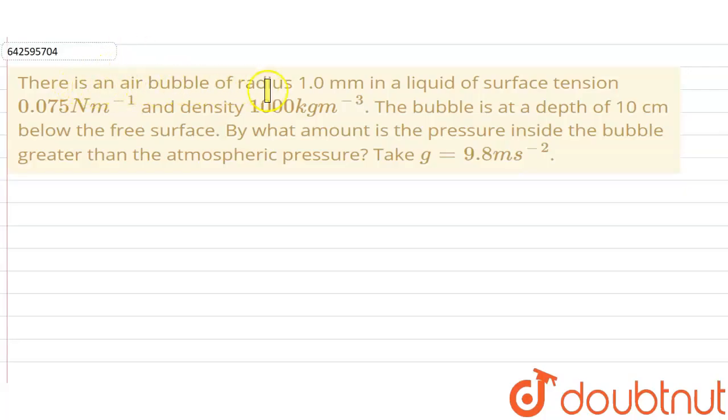There is an air bubble of radius 1.0 mm in a liquid of surface tension 0.075 N/m and density 1000 kg/m³. The bubble is at a depth of 10 cm below the free surface. By what amount is the pressure inside the bubble greater than the atmospheric pressure? Take g = 9.8 m/s².